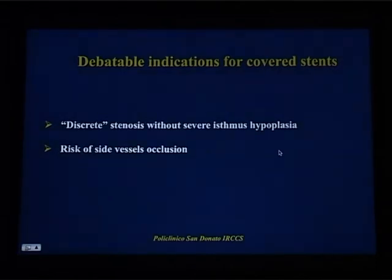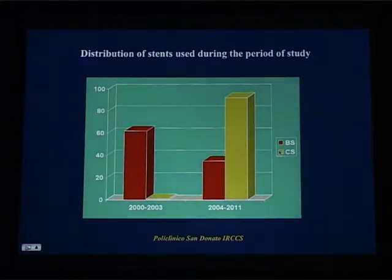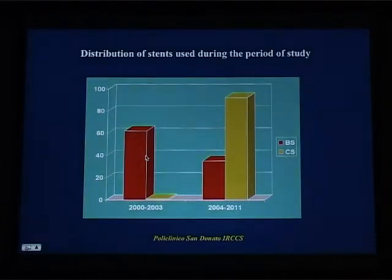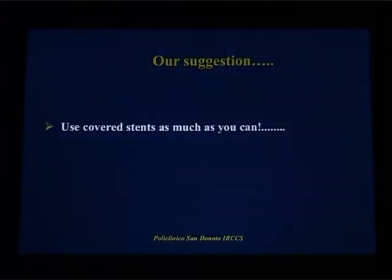The indication for covered stents is debatable when you have a discrete stenosis without severe isthmus hypoplasia — probably bare metal stents can do the same job. However, I prefer to use covered stents anyway. Looking at our experience from 2000 onwards, from 2000 to 2003 we used only bare metal stents because covered stents were not available, but since 2004 covered stents represent the vast majority of our patients. Our suggestion is to use covered stents as much as possible because the risk of complications is significantly reduced.